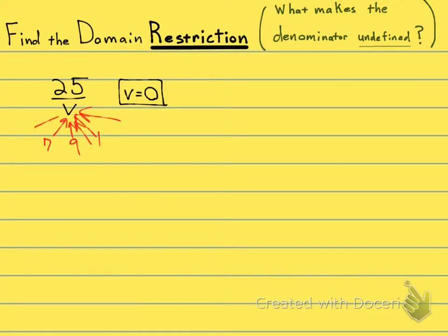The only thing that will give you a zero in the bottom is if v is zero. So following the steps, we are going to take the denominator, set it not equal to zero, and we're going to find out that v cannot be zero.